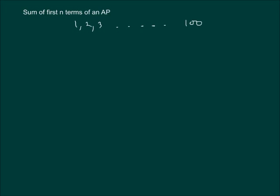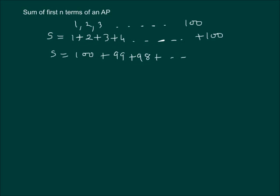Now suppose S denotes the sum of these 100 terms: 1 plus 2 plus 3 plus 4 and so on plus 100. To find this, we have a technique. What we can do is reverse the numbers, so S becomes 100 plus 99 plus 98 and so on plus 3 plus 2 plus 1.